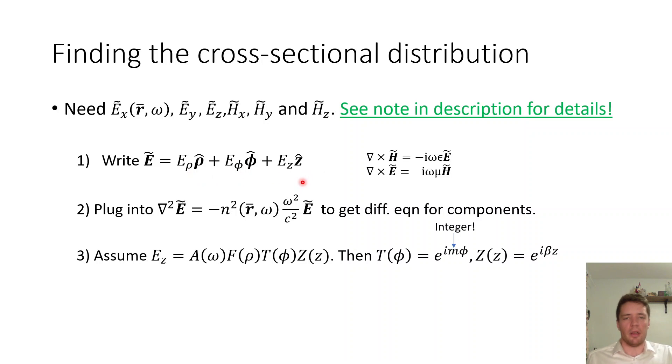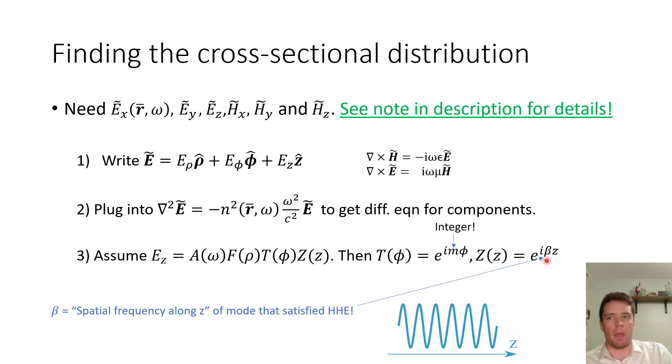Then we get a differential equation for each one of these components e_rho, e_phi and e_z and it turns out that the easiest way to proceed is to solve the z component first because it's the simplest one so we assume that it can be solved with separation of variables and that gives us the fact that the angular part is simply a complex exponential with m being an integer, again that simply arises because if we go around by 2π we should get the same result coming out and we get a z part that also looks like a complex exponential with a value of beta here that can take on a number of different values.